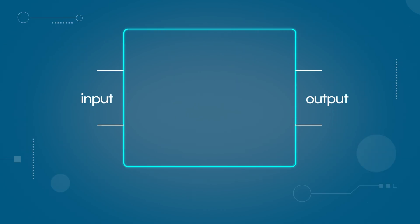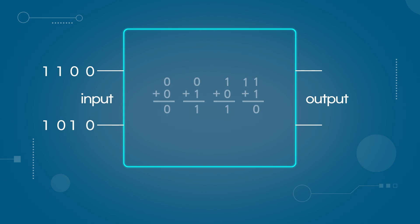Let's create a circuit to represent the binary addition process. The input values are 1,1 then 1,0 then 0,1 then 0,0. In this case, the output values can include just the sum, but a carry may also occur. Therefore, the output consists of two components: the sum and the carry.